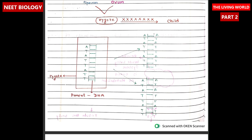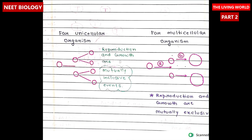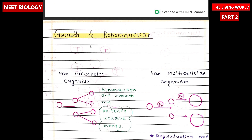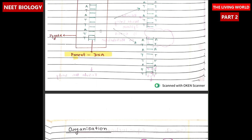Replication involves DNA. Organization: coma patients have sensitivity absent but metabolism present. There is no single property which can differentiate between living and non-living things. Growth and replication: reproduction is there for unicellular organisms and for multicellular organisms. Reproduction and growth are mutually exclusive. Here the first chapter of unit one is completed.